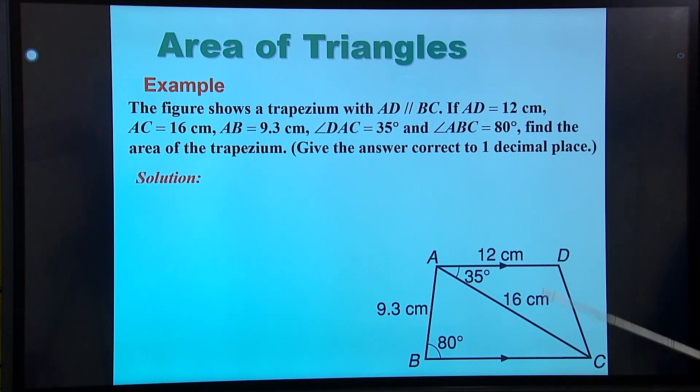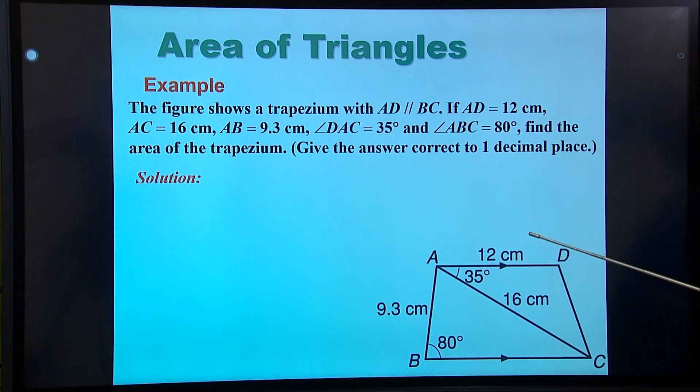Area for trapezium. Half the sum of the parallel sides, which I don't have, times the height. I don't have because this is not, the height must be at 90 degrees. So this is at 80 degrees. So I can't use the trapezium formula. But if I look at this, I've got the two sides and the included angle. That's a triangle. So I can use the area formula.